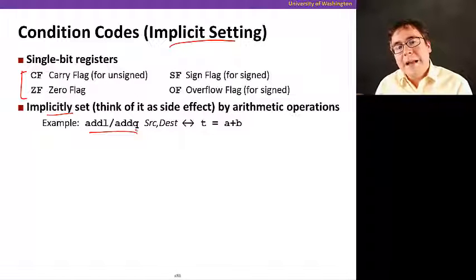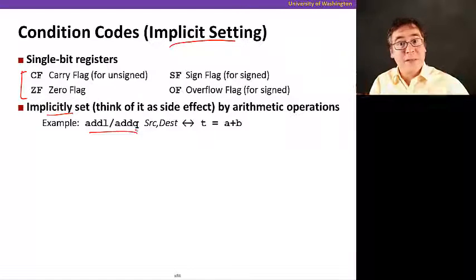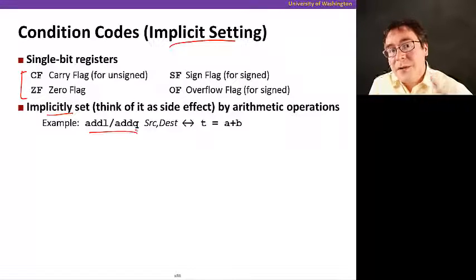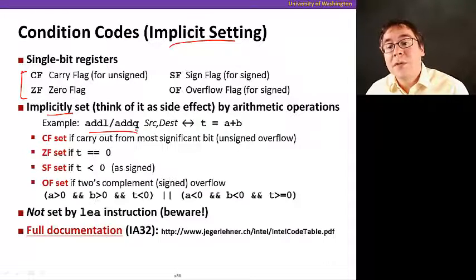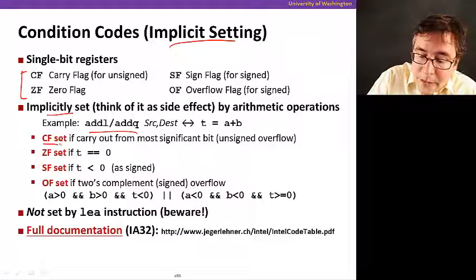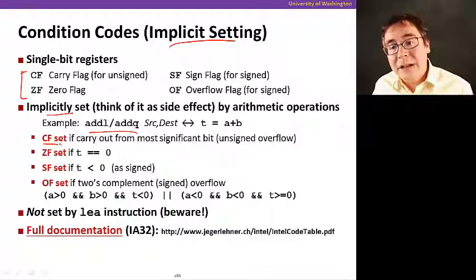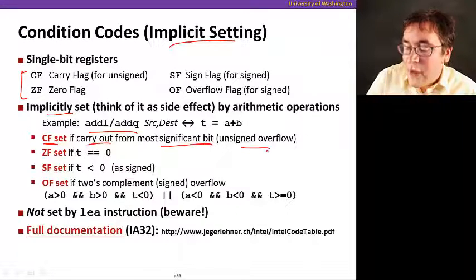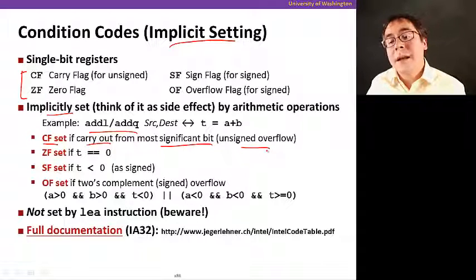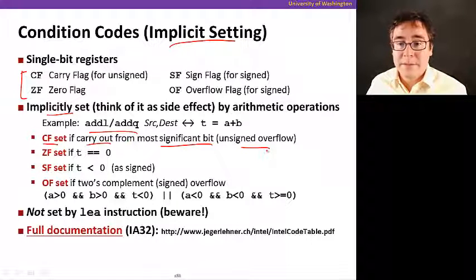This instruction performs the arithmetic addition operation, but in addition to that, it also sets some condition codes depending on what happens to the result. For example, in the case of add, the CF is set if there's a carry out from the most significant bit, which is essentially an unsigned overflow happening in the addition.